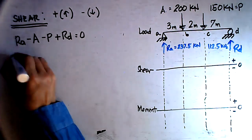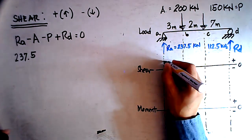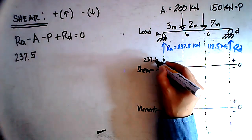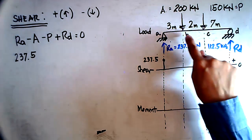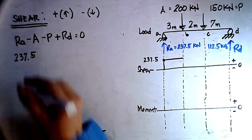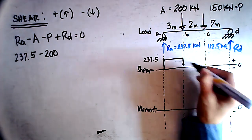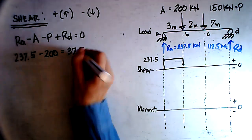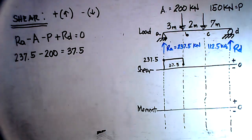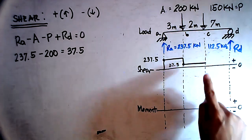Reaction at A is 237.5 kilonewtons going up, so we draw that. Because there is no load between point A and point B, we have a zero-degree curve there. Then at B we subtract the 200 kilonewton load, giving 237.5 minus 200, which equals 37.5 kilonewtons. From point B to point C, there are no loads, so we again have a zero-degree curve at 37.5.